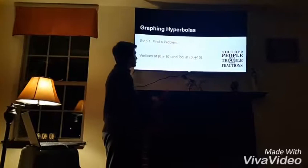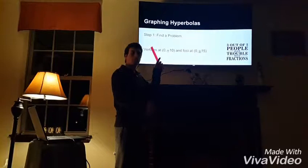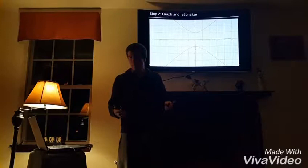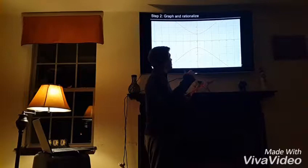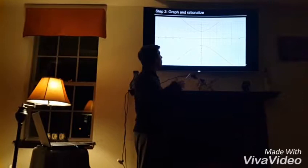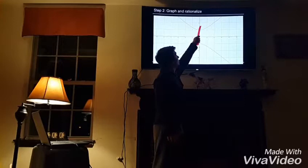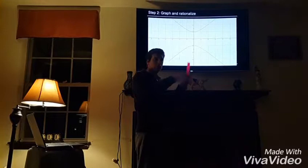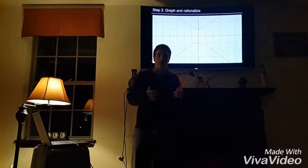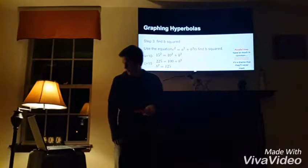We will be graphing hyperbolas. Step 1 is to find your problem. We are going to use the problem of vertices at (0, ±10) and foci at (0, ±15). Step 2 is to take a general graph of your problem. If you graph your vertices at (0, 10) and (0, -10) on the y-axis, and the foci at (0, 15) and (0, -15) on the y-axis, your vertices will be the point of reflection for your general estimated hyperbola graph. It doesn't have to be perfect — that's just a generalization, a guesstimation, and later on we will find the actual curve.